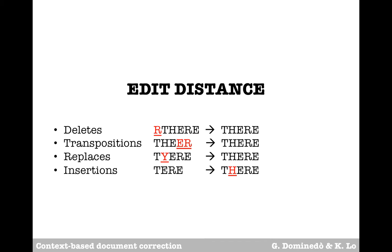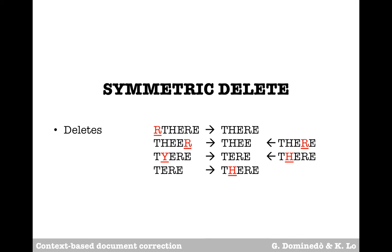We first implemented a serial algorithm in Python known as symmetric delete, which exploits the fact that the edit distance between two terms is symmetrical. Rather than generating four types of edits, it only checks terms generated by character deletions to determine potential corrections at the word level.